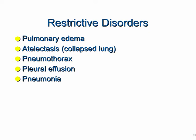Pulmonary disorders are often sectioned into restrictive versus obstructive. Restrictive disorders include things like pulmonary edema and atelectasis — which is a collapsed lung at the micro alveolar level, not necessarily an entire lobe like a pneumothorax. You can also have a pneumothorax, pleural effusion, or pneumonia — things that are inhibiting oxygenation at the alveolar level.